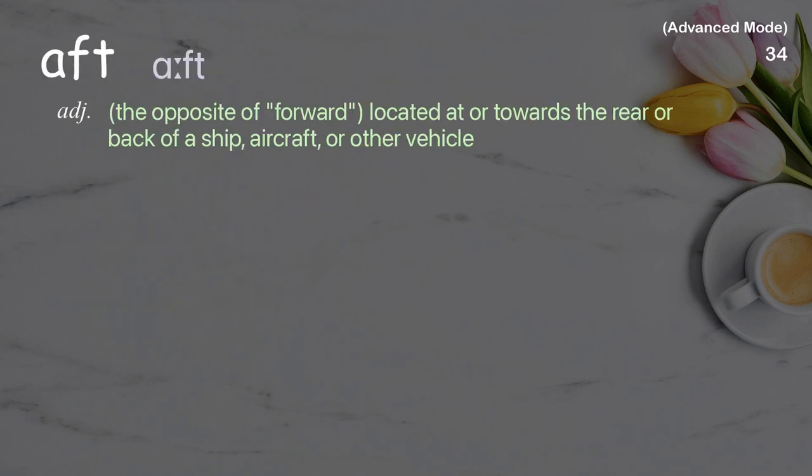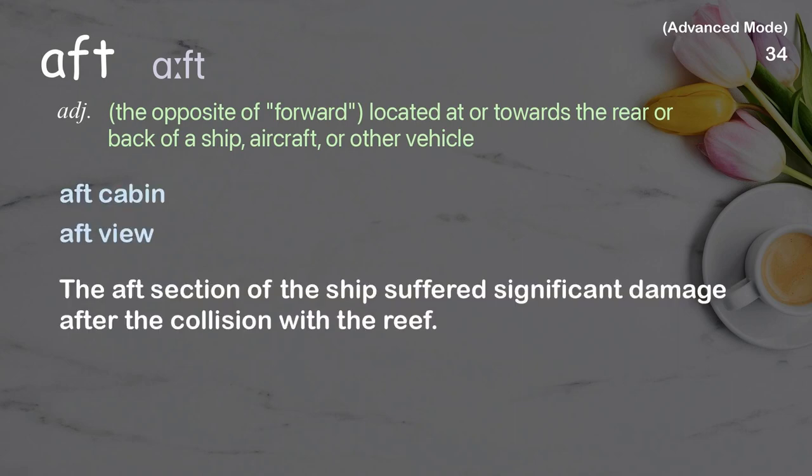Aft: The opposite of forward; located at or towards the rear or back of a ship, aircraft, or other vehicle. Examples: aft cabin, aft view. The aft section of the ship suffered significant damage after the collision with the reef.